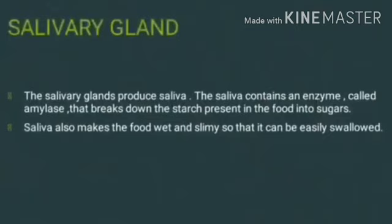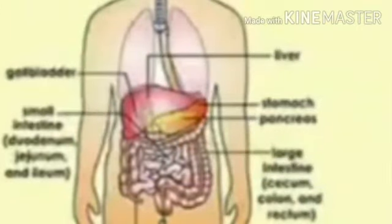Now, the salivary gland. The salivary gland secretes saliva. The saliva contains an enzyme called amylase, which breaks down the starch present in food into sugar. Saliva also makes the food wet and slimy so that it can be easily swallowed. This is the function of the salivary gland.